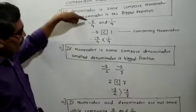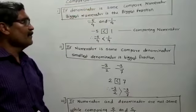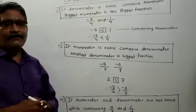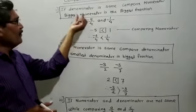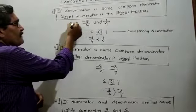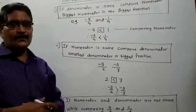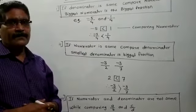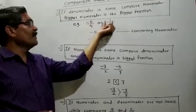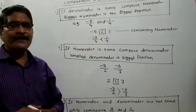For example, compare -5/4 and 1/4. Observe this example: the denominator is the same — this denominator is 4 and this denominator is also 4. So, since the denominator is the same, you have to compare the numerators: -5 and 1.